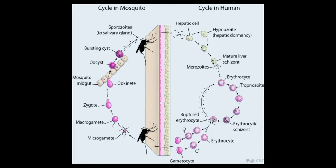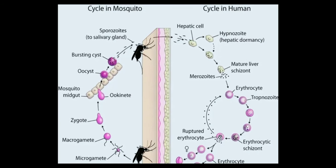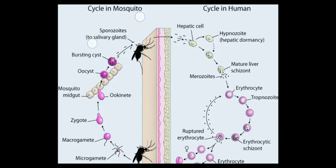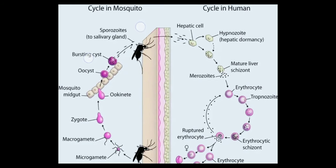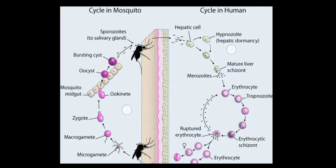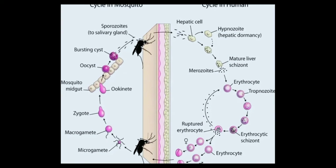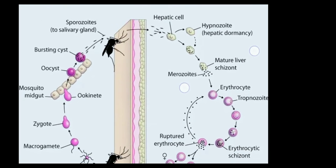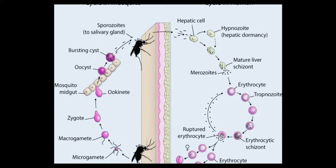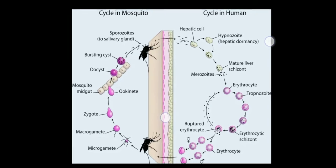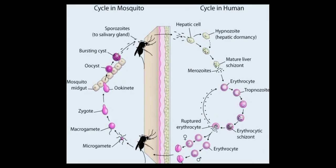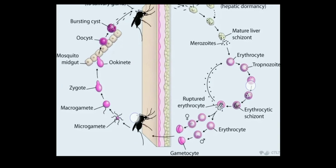This is the overall cycle of Plasmodium: the asexual cycle completes in humans and the sexual cycle completes in the mosquito. First, the mosquito bites a person and inoculates a sporozoite into the blood. It travels to the liver, matures there, and forms merozoites which invade RBCs. After several cycles, erythrocytic stages form gametocytes.